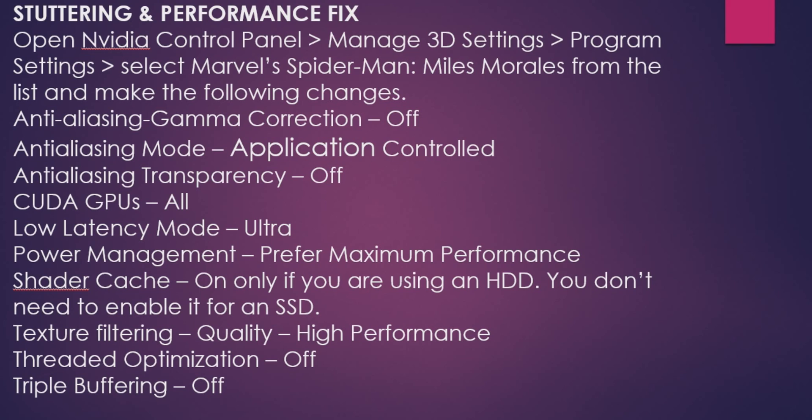For the stuttering and performance fix, if you are using an Nvidia GPU, open the Nvidia Control Panel, go to Manage 3D Settings, then Program Settings, and select Marvel's Spider-Man Miles Morales. Make the following changes: Anti-aliasing gamma correction — Off; Anti-aliasing mode — Application Controlled; Transparency — Off; Low Latency Mode — Ultra; Power Management — Prefer Maximum Performance; Shader Cache — On only if using a hard disk drive, not needed for SSD; Texture Filtering Quality — High Performance; Threaded Optimization — Off.